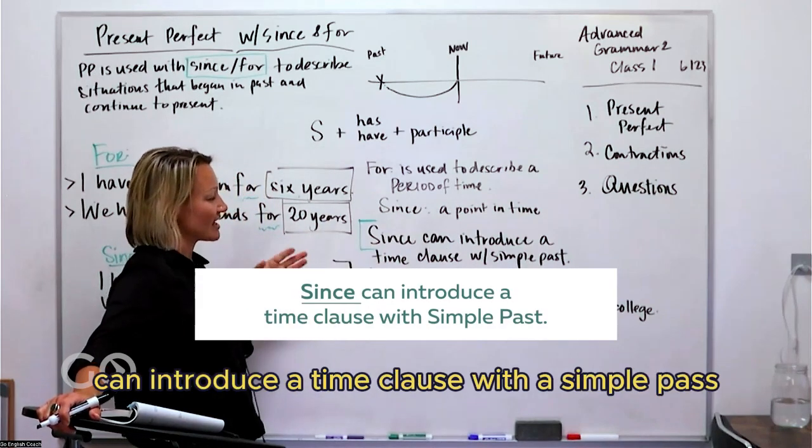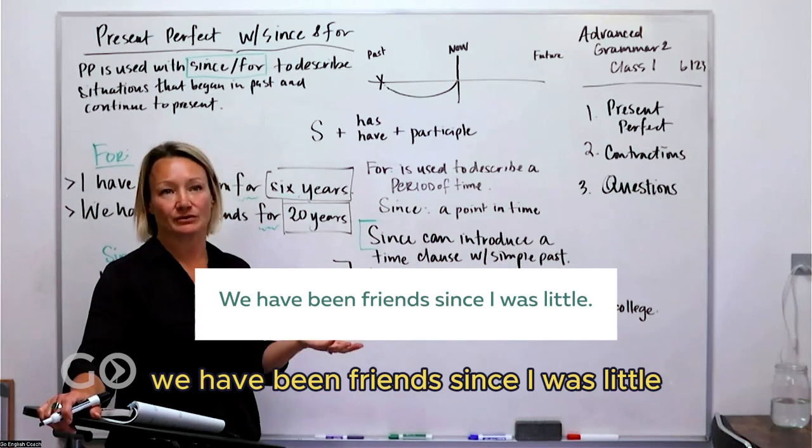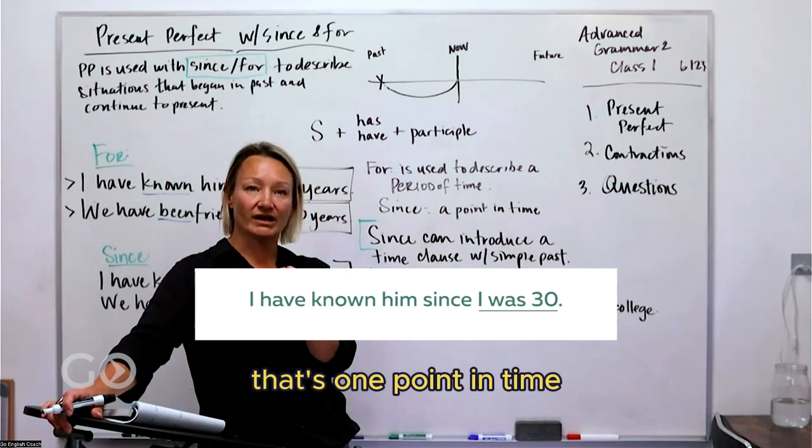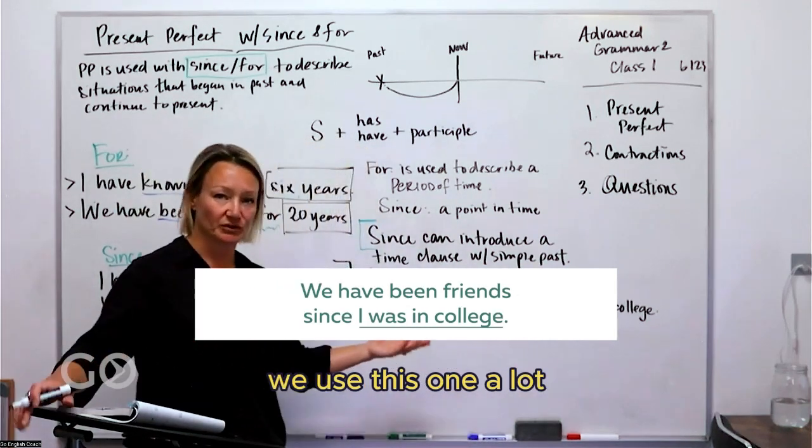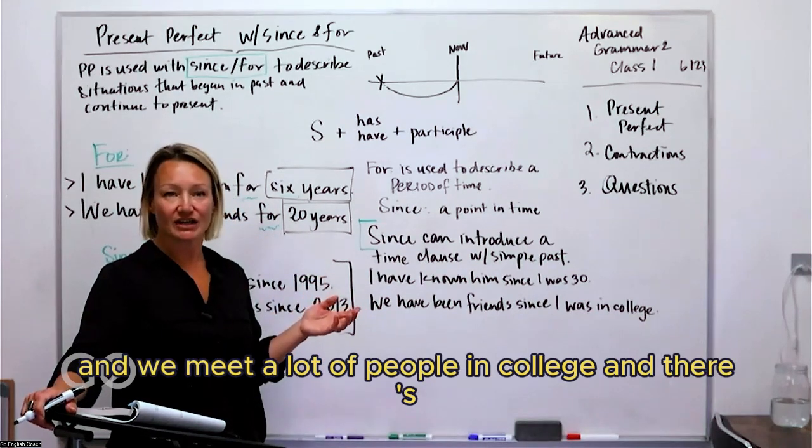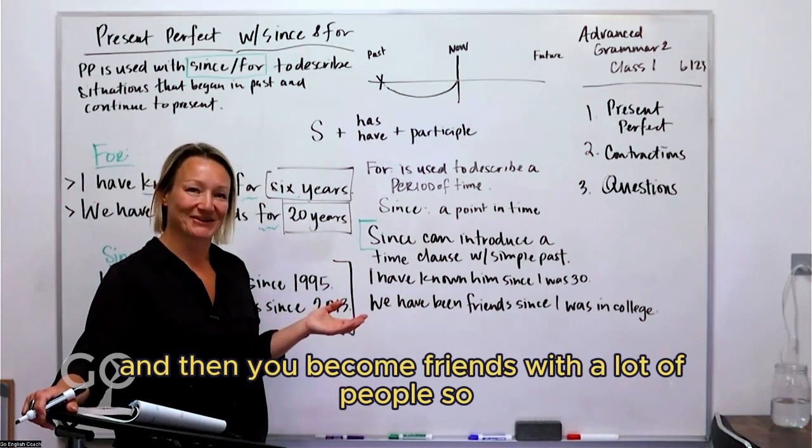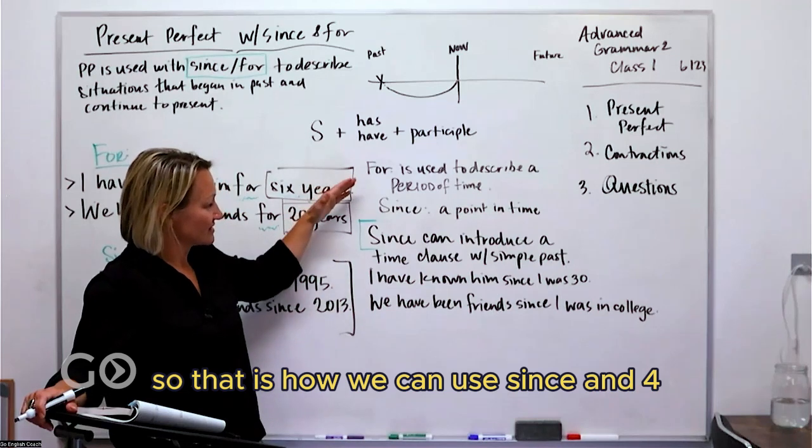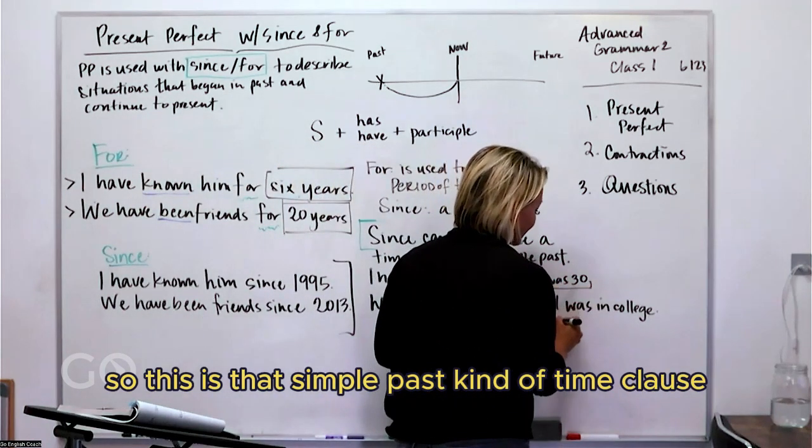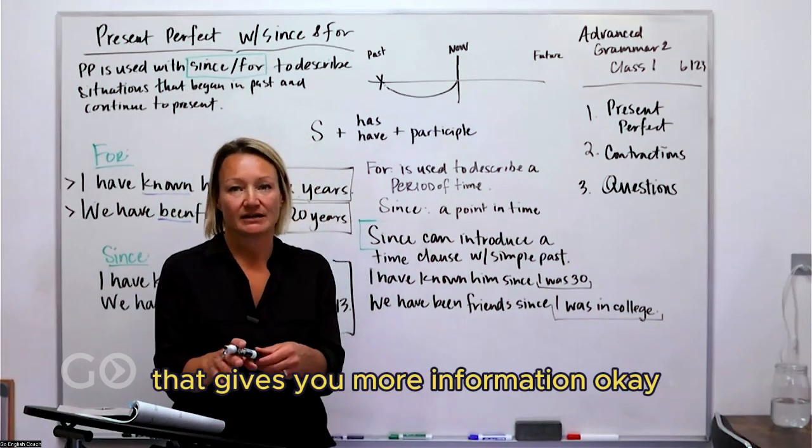Since can introduce a time clause with a simple past. So I could say we have been friends since I was little. That's a point in time in the past, one point in time in the past. I have known him since I was 30. We have been friends since I was in college. We use this one a lot because many people my age in United States went to college and we meet a lot of people in college. So that is how we can use since and for. This is that simple past kind of time clause. And a clause is just a part of the sentence that gives you more information.